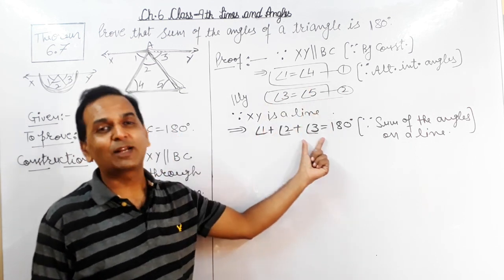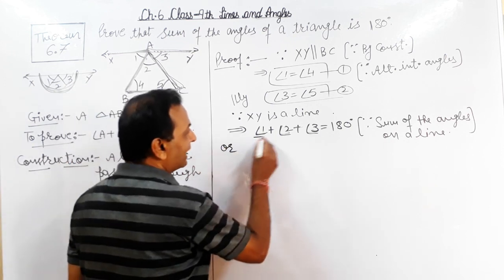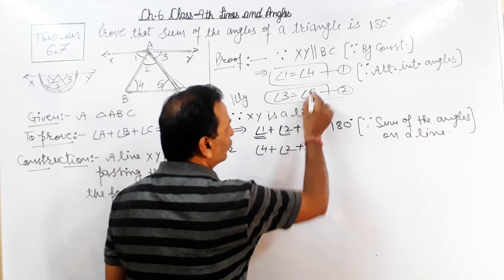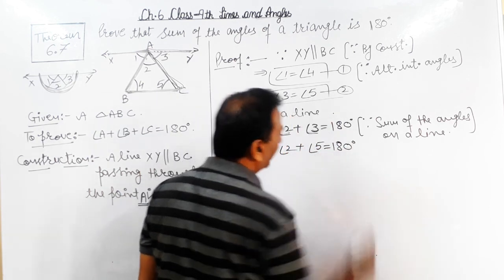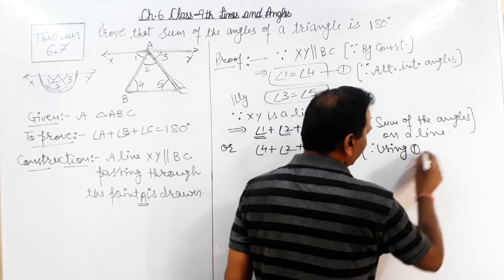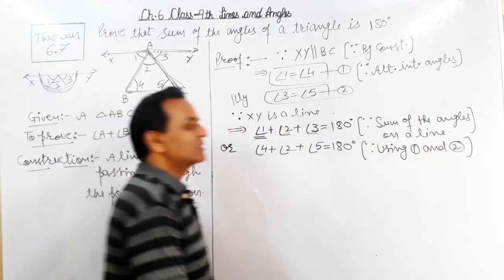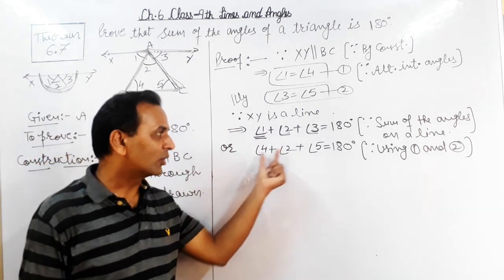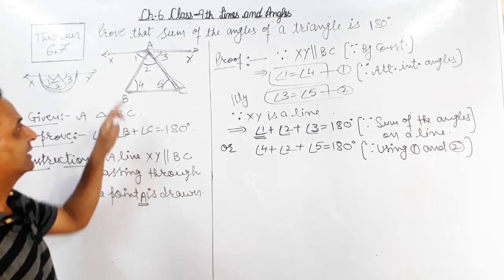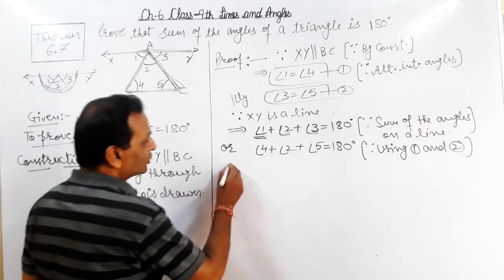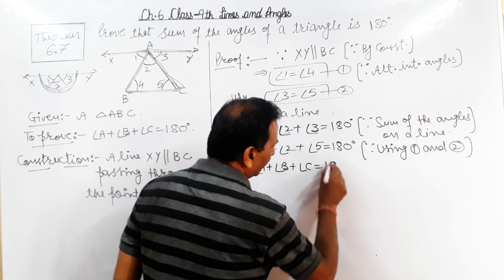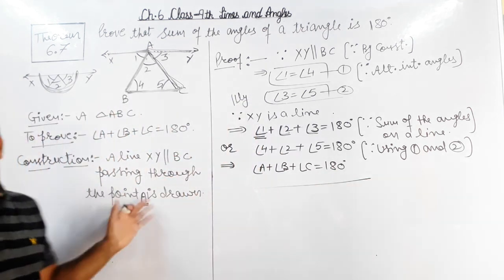We can write down: angle 4 plus angle 2 plus angle 5 equals 180 degrees — using result number 1 and result number 2। Angle 4, angle 2, angle 5 are the interior angles of triangle ABC. This implies angle A plus angle B plus angle C equals 180 degrees। That's all — यह हमारे पास था Theorem 6.7।